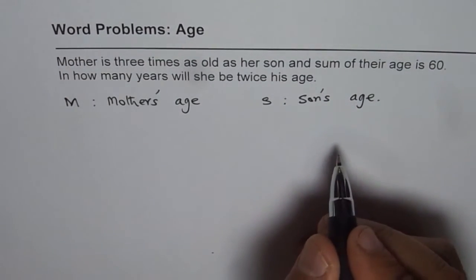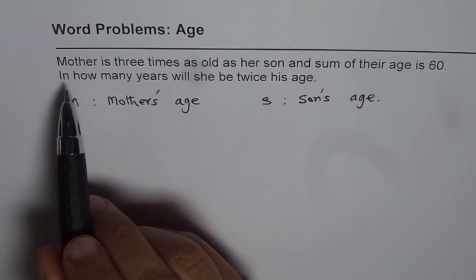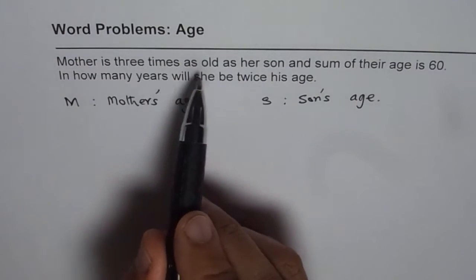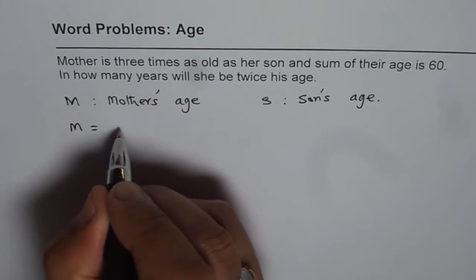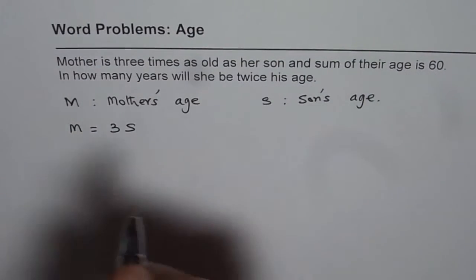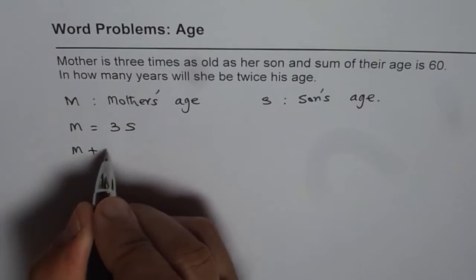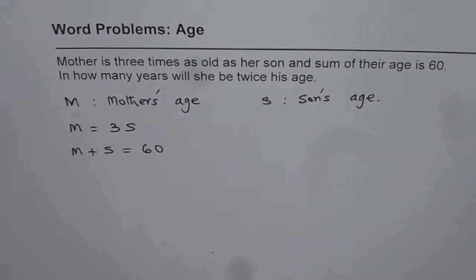Once we have defined the variables, we can write down the equations. The statement here is mother is three times as old as her son. That means M equals three times S. And sum of their ages is 60. That means M plus S equals 60. So that is how we get our equations.